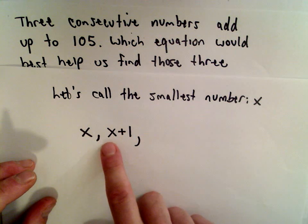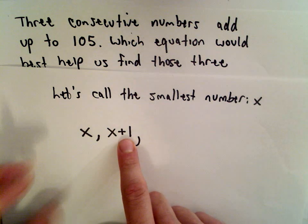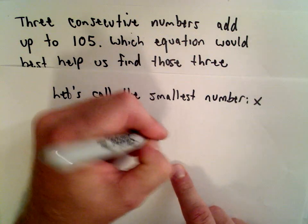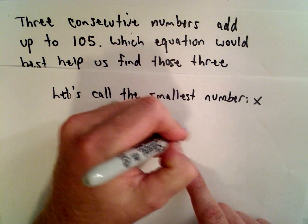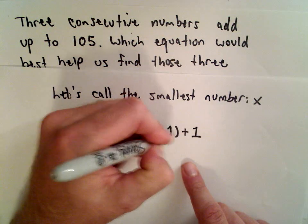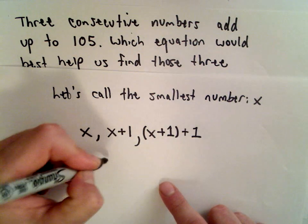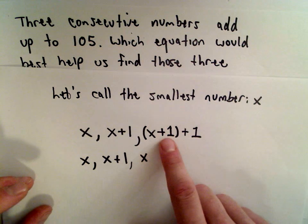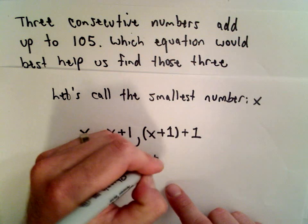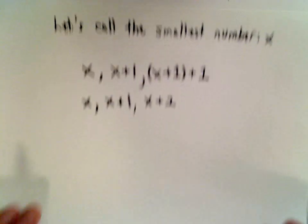To get to the number after x plus 1, you would have to add 1 to that number. So the previous number, x plus 1, we'll have to add 1 to that one as well. So our three numbers we can label as x, x plus 1, and x plus 1 plus 1, which gives us x plus 2.